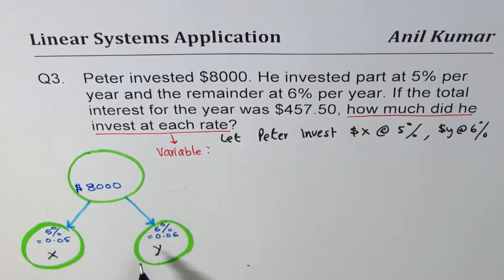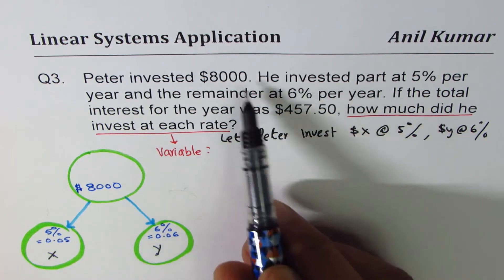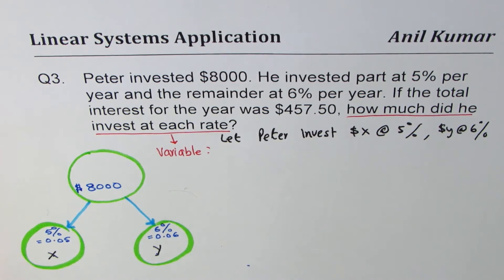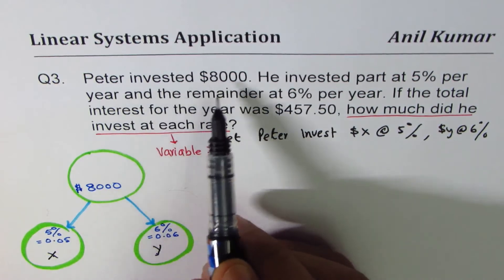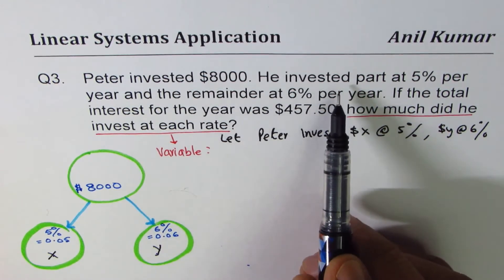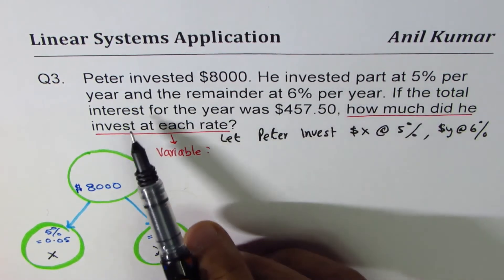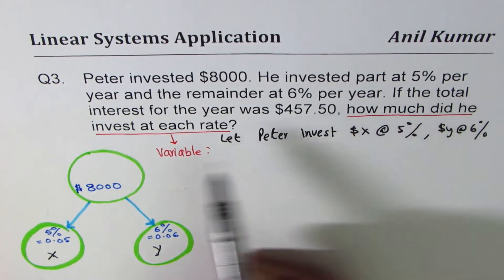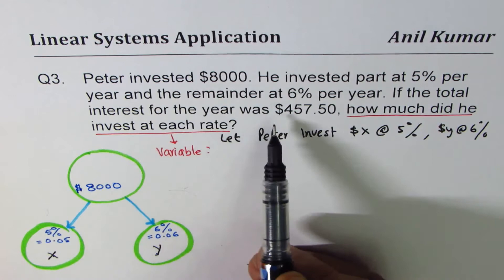The idea is to form equations using these statements and solve them to get the values of x and y. You can always pause the video, answer the question, and then look at my strategy and solution. Re-reading the question: Peter invested $8,000, part at 5% per year and the remainder at 6%.